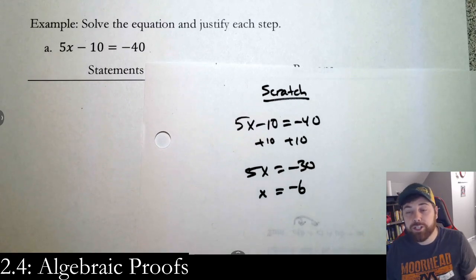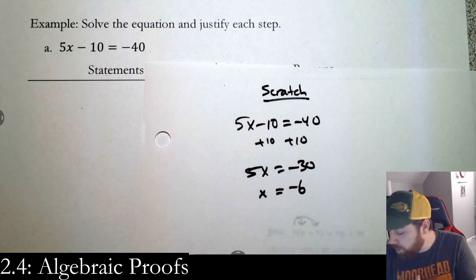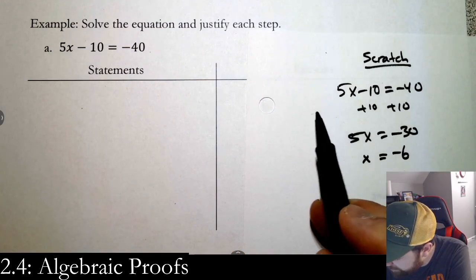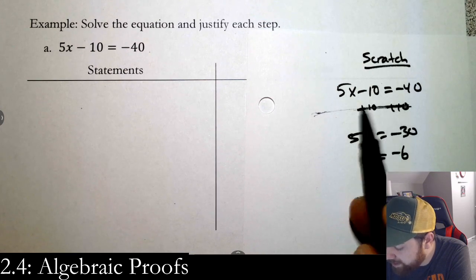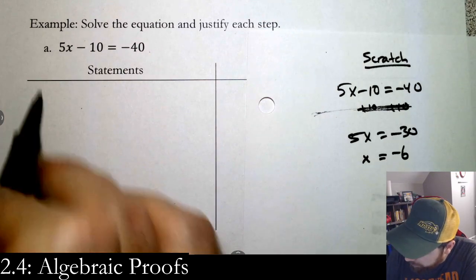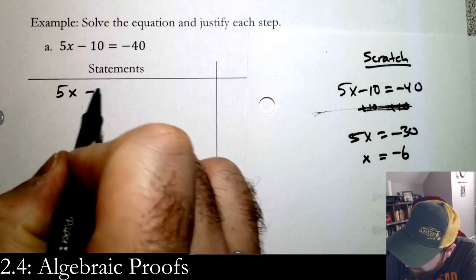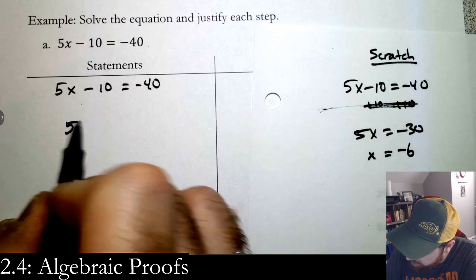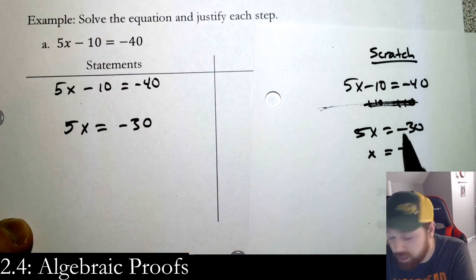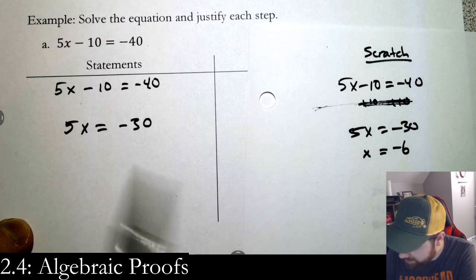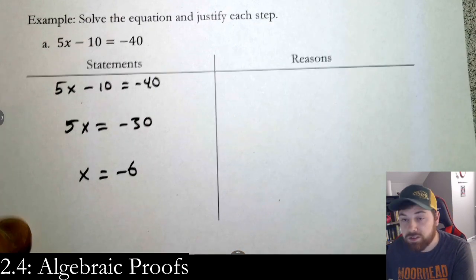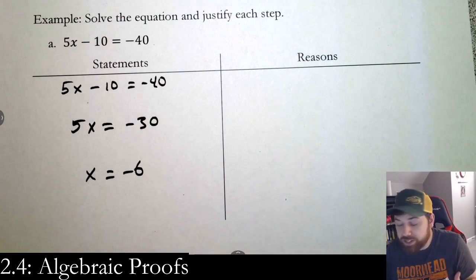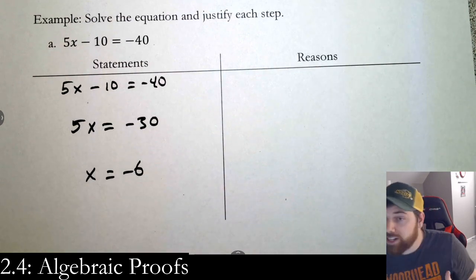What we want to do is put these steps into our statements without the scratch work filler. So I put in the original equation, then after the first step 5x = −30, then after dividing by 5 the final answer x = −6. Now our scratch work is gone — it's completely polished. All we're doing is reverse-engineering what we did.